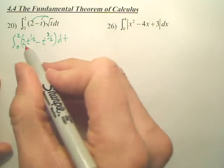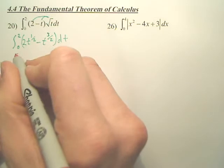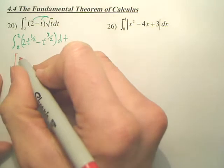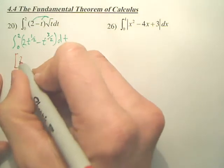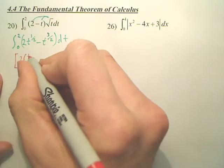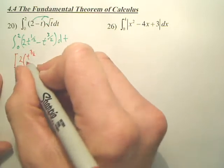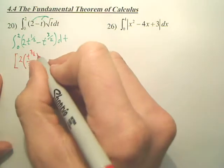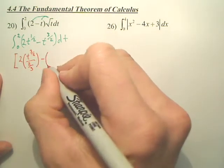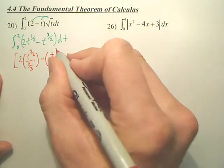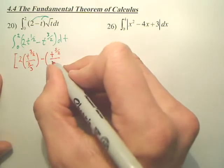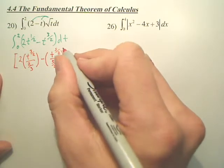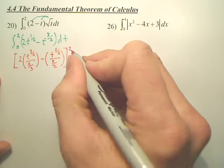Next, we integrate each piece individually. Once you integrate, you put brackets. So you add one to one-half and you get three-halves. So you got t to the three-halves divided by two-thirds minus. Add one to this, you get five over two.